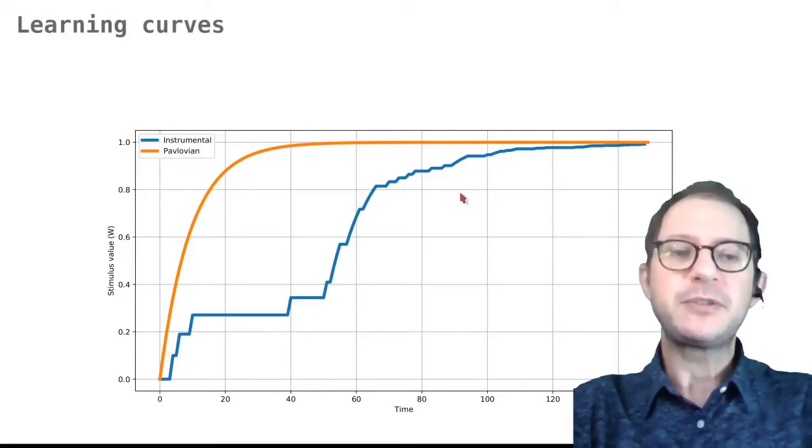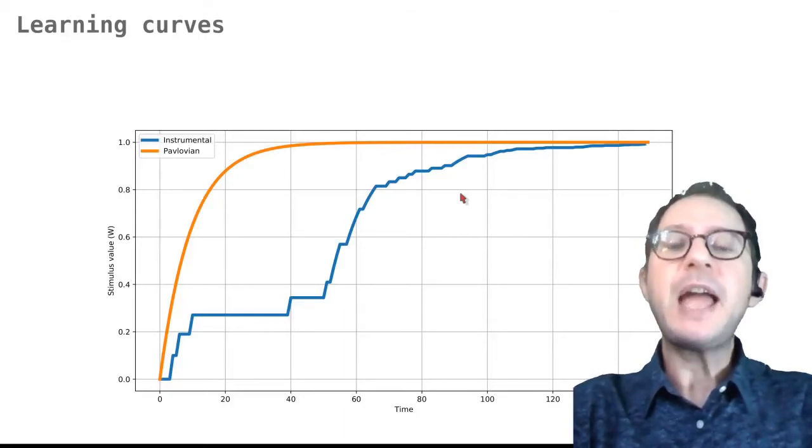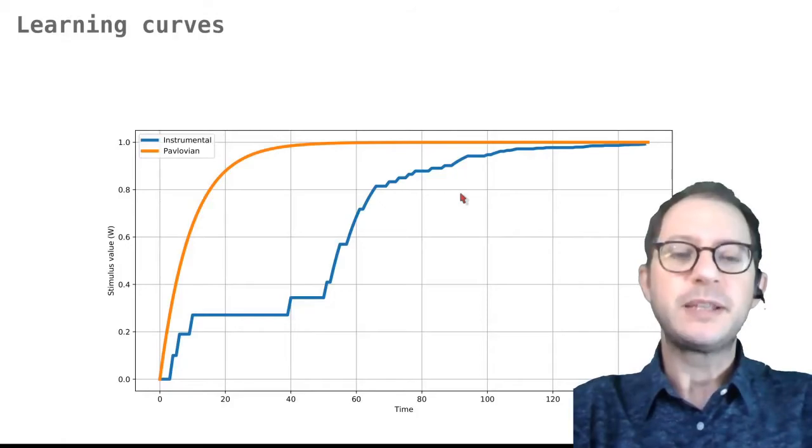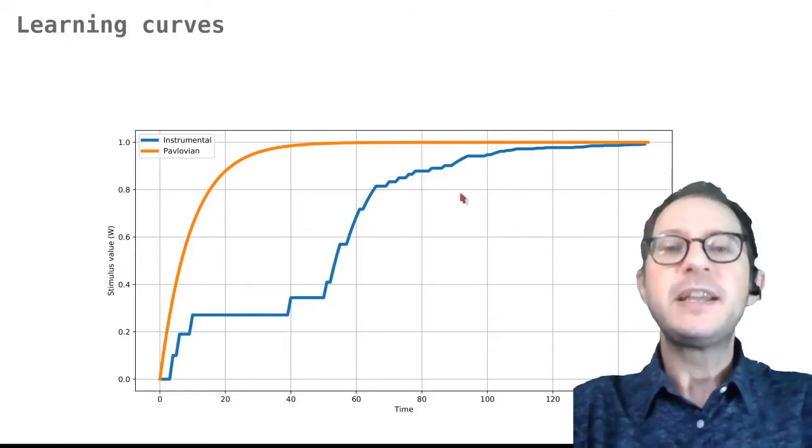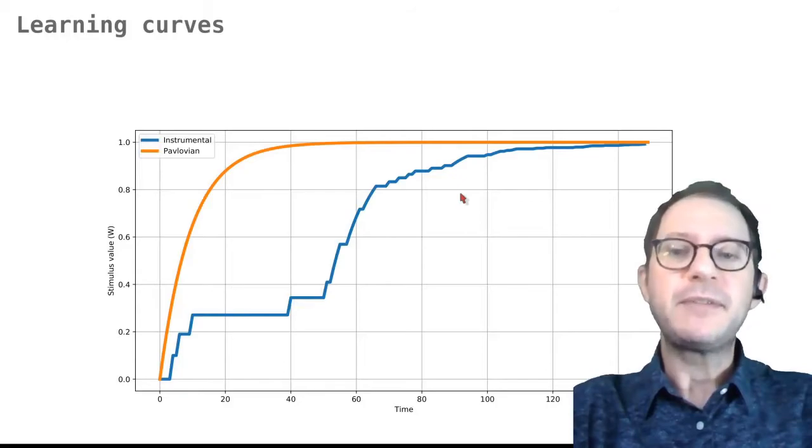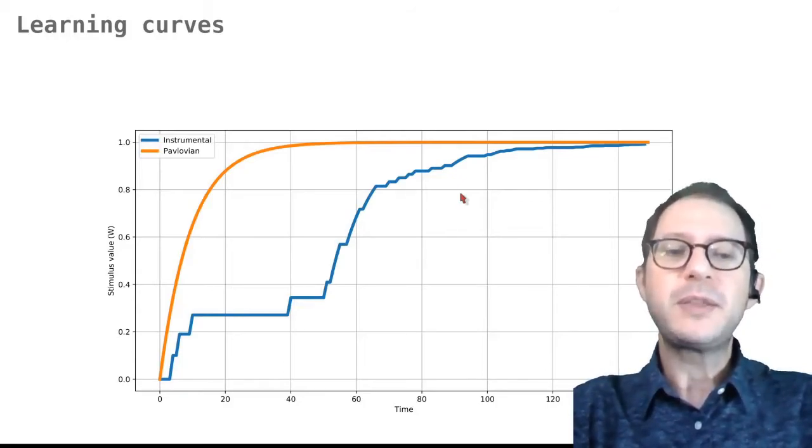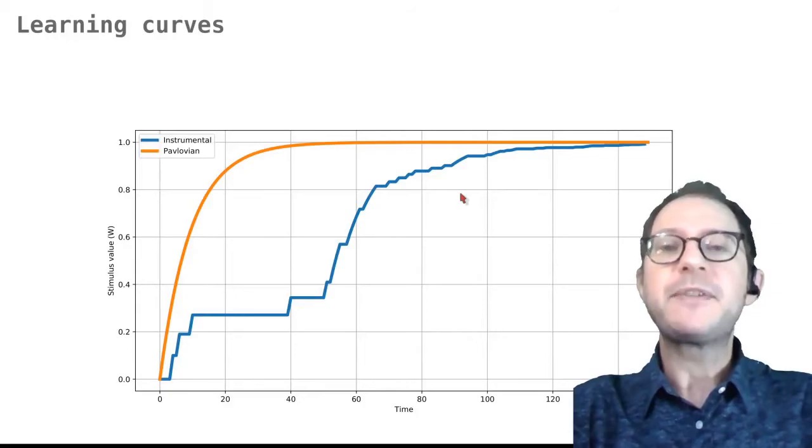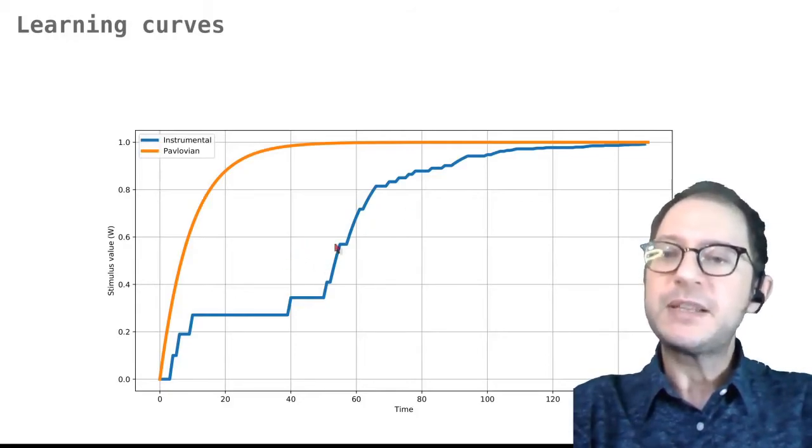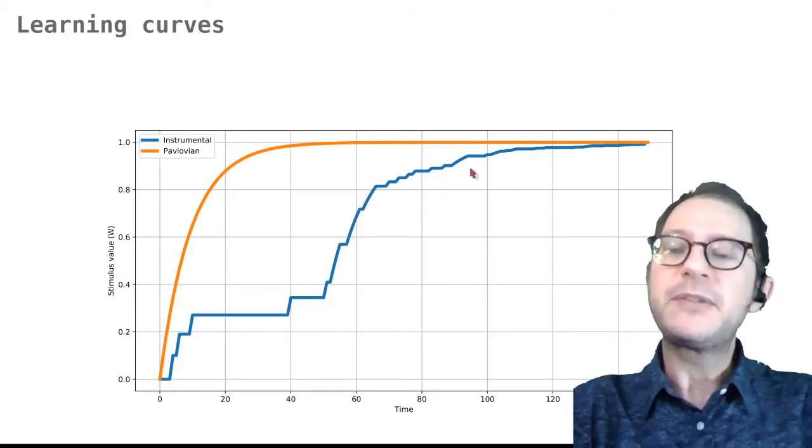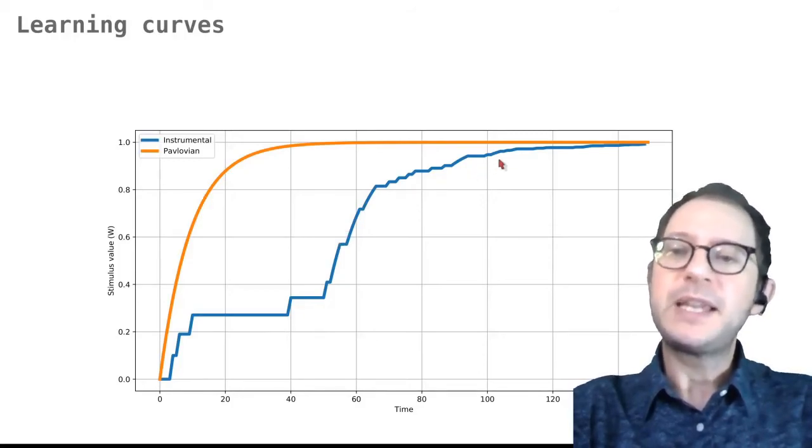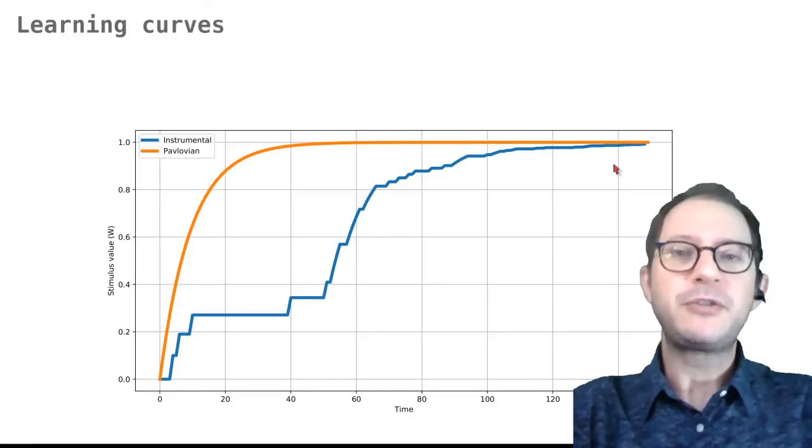You may remember from our lesson on learning actions that this irregular growth also happens for the value of the action itself. In fact, the reason is the same. The value of the lever can increase only if the animal actually presses the lever and gets food, because only then the food is delivered and the animal can learn that the lever has value. So this increases slower in the beginning when pressing the lever is rare, and then once the animal starts to press the lever more regularly, then the increase becomes more rapid and it actually catches up eventually with the Pavlovian conditioning curve.